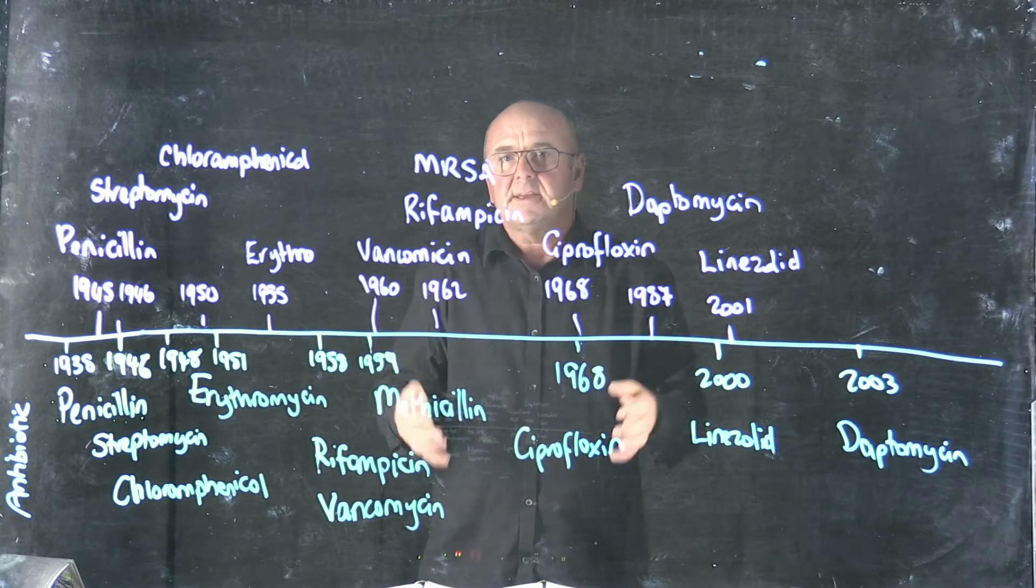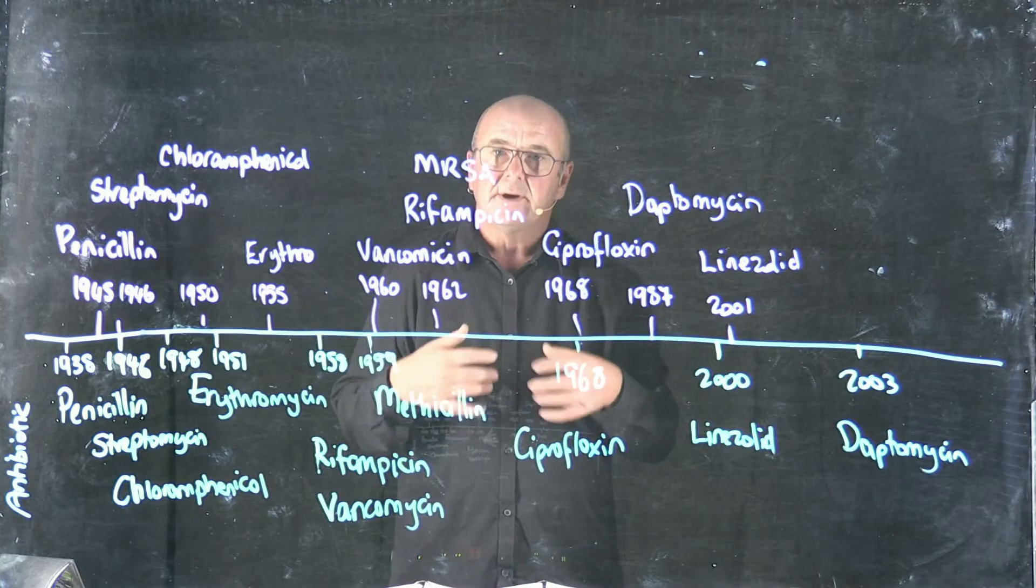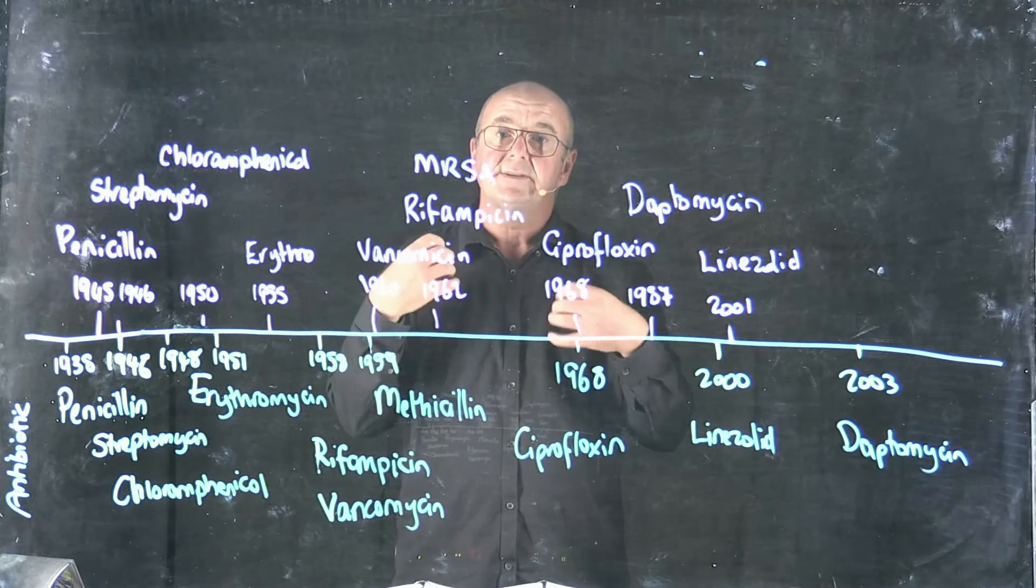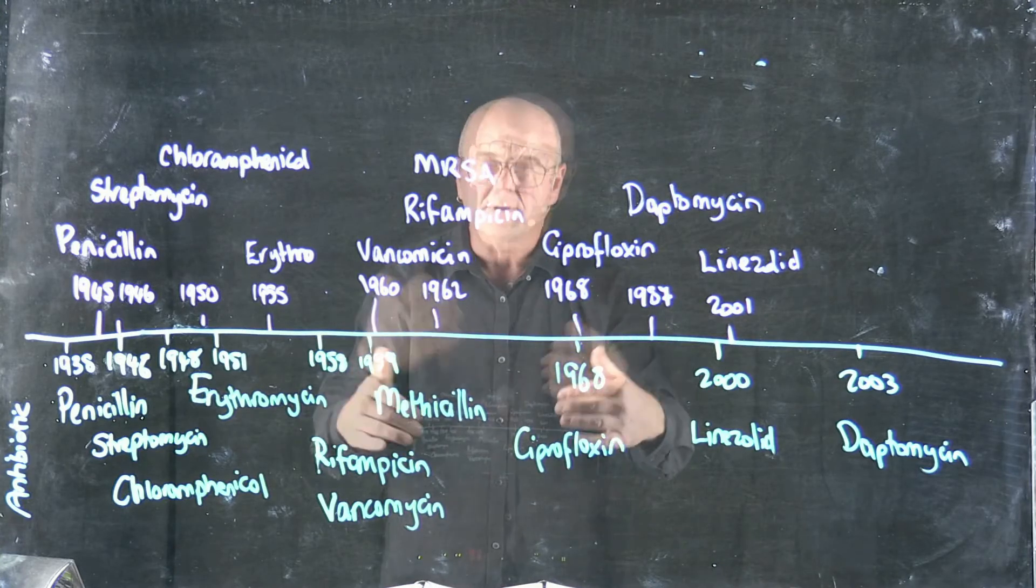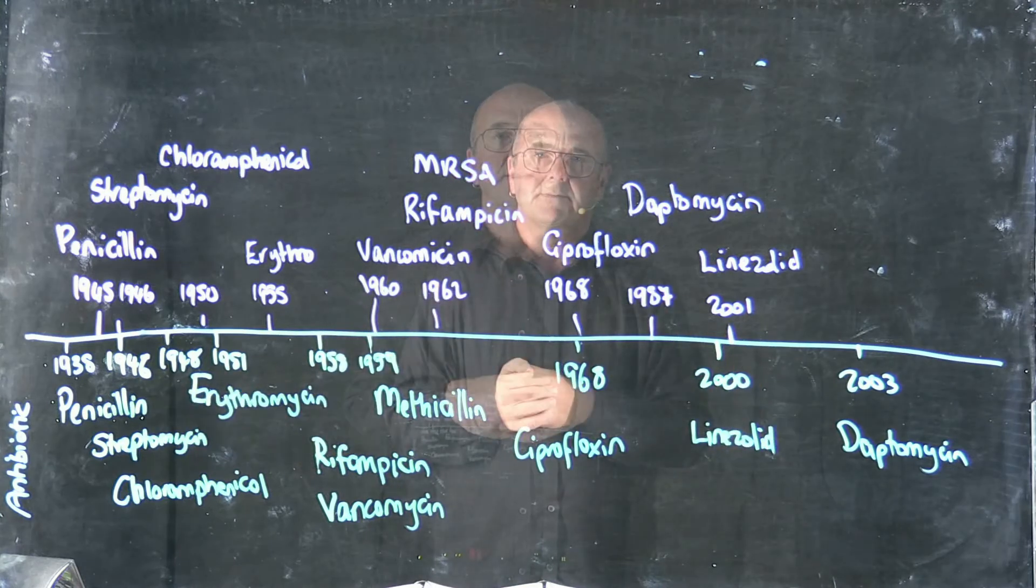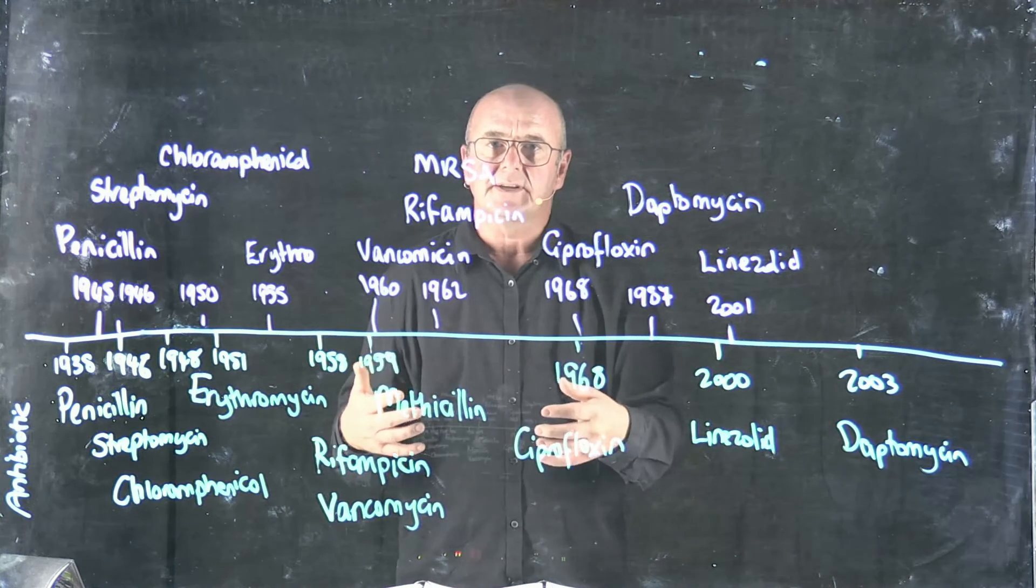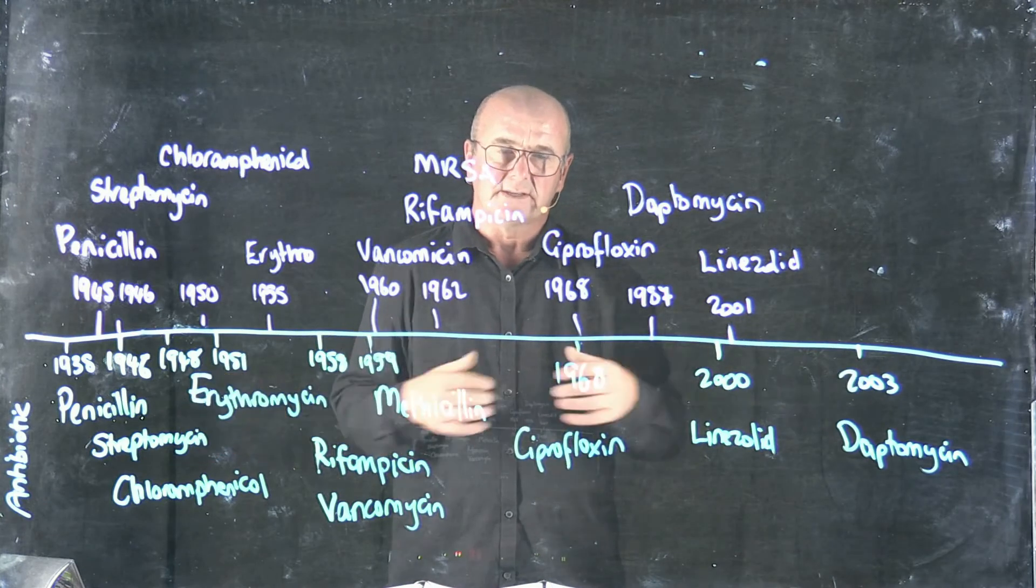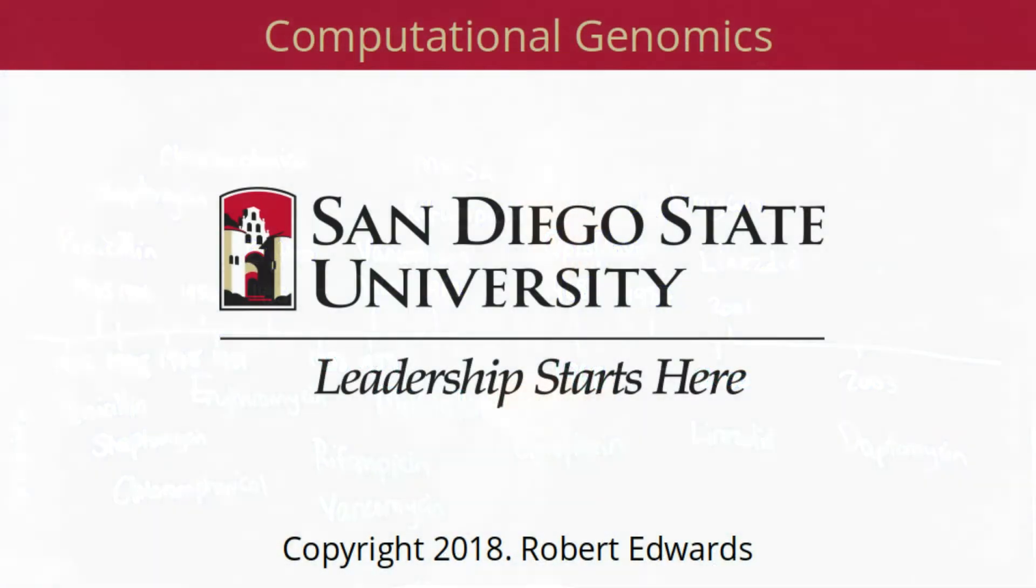And then the third thing, which is not something that you can necessarily do at home, but the thing that we need to do is we need to identify new targets for antibiotics, and we need to identify new compounds, new chemicals, that we can use as antibiotics so that we're not limited to the antibiotics that we've produced over the last few years. We've got new antibiotics that are coming in. We've got new antibiotics.